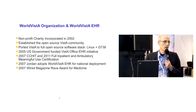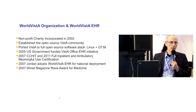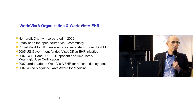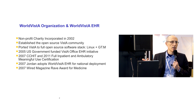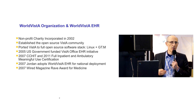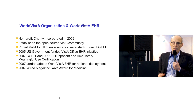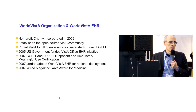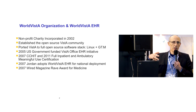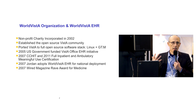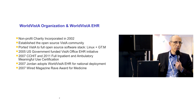In 2005, WorldVista was part of a contract to adapt Vista for use outside the VA in what is called the US Safety Net — all the not-for-profit clinics and community hospitals in the US that serve about 50 million citizens. That was the first formal attempt to start building the capability to support Vista on a large scale outside the VA for public health systems.